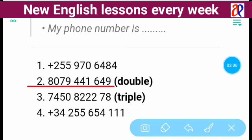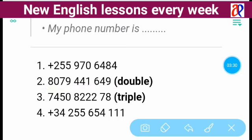So this number can be read two ways: eight zero seven nine four four one six four nine, or eight zero seven nine double four one six four nine. Even if you don't use the word 'double,' there's no problem — 'double' simply helps you avoid saying the same number twice. Let's go to the third example.